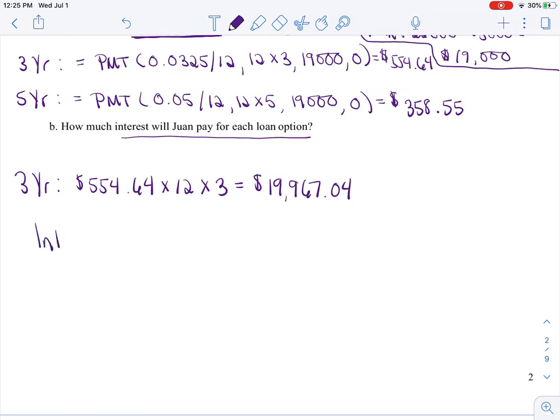Well, the interest then, so be clear with marking your work, would be how much you paid, and again use those dollar signs, minus how much you really had to borrow. And you'll see here that they made almost $1,000 more off of us, just from us borrowing from them.